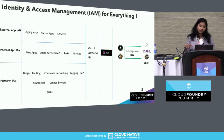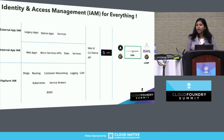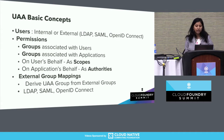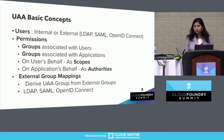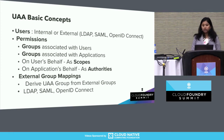To sum it all up, what UAA is really doing for you is providing a standards-based identity both at a platform level and at your app level, whether internal or external apps. Now, some basic concepts about UAA before we get into all the features and roadmap. Users in UAA can come in two shapes: they could be internal or external. External means your existing user stores — LDAP, SAML, or an OpenID Connect compliant identity provider.